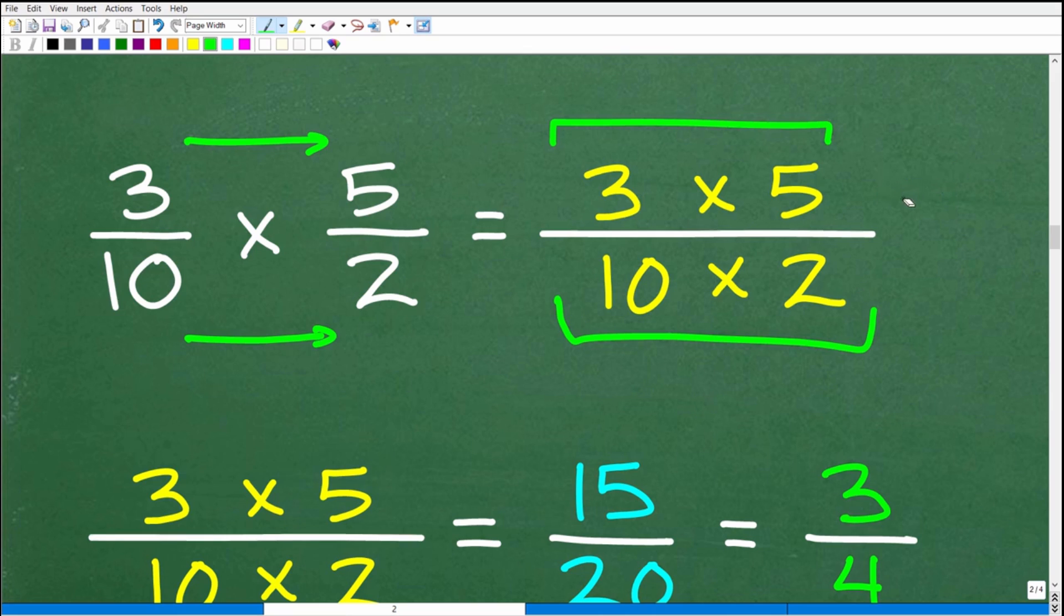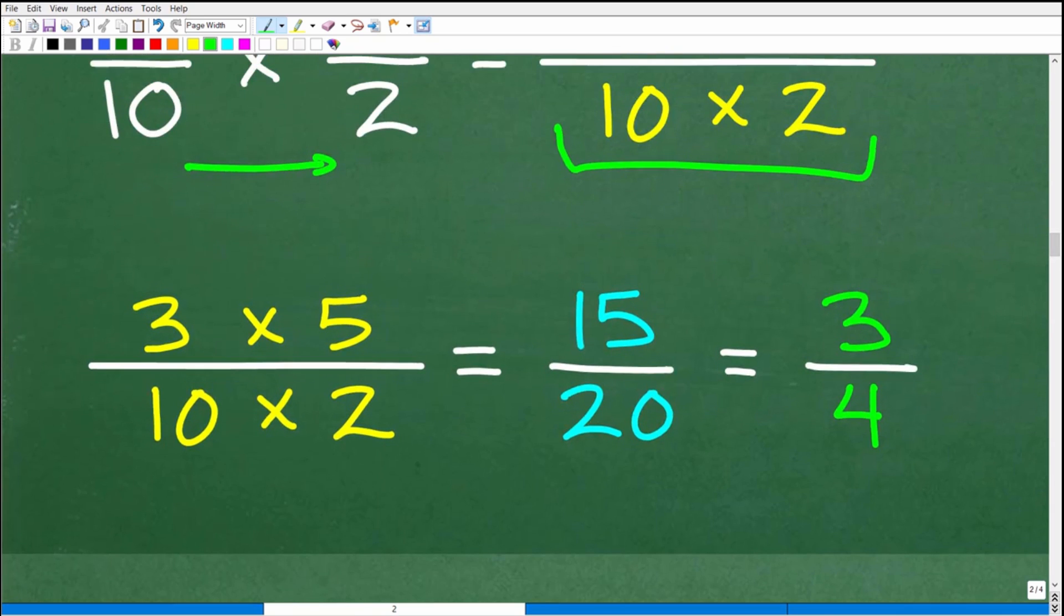Alright, so I'm just taking it nice and slow here for those of you that might be a little bit rusty on fractions. So let's go ahead and clean this up. So 3 times 5 over 10 times 2. Most of you can see what the answer is going to be. So 3 times 5, of course, is 15. 10 times 2 is 20.